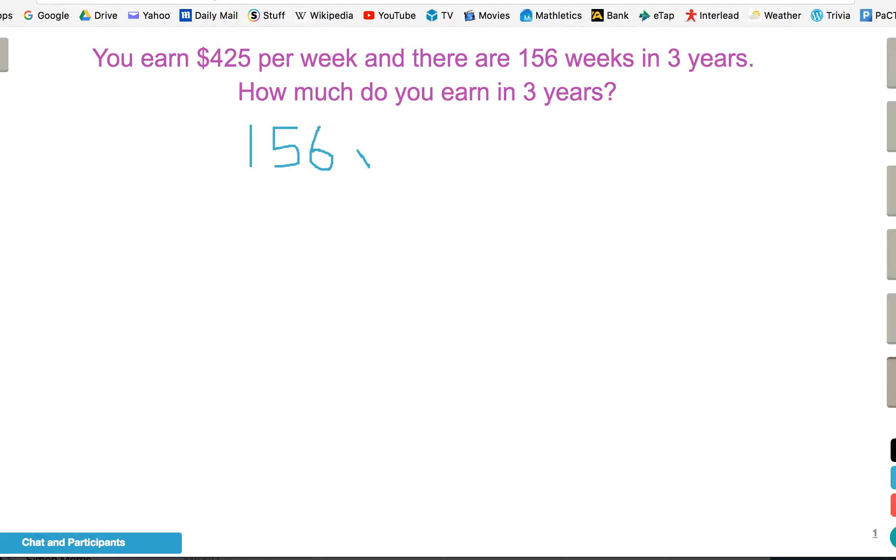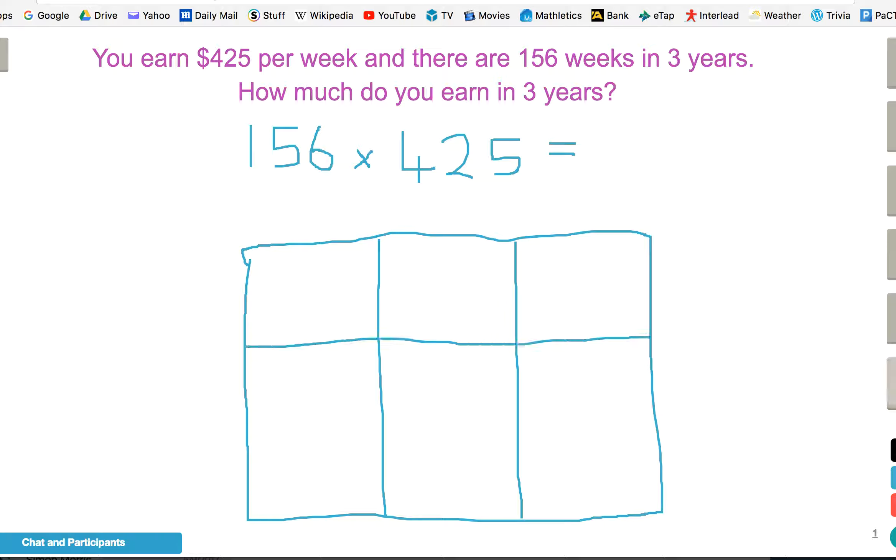So we lay out our sum: 156 weeks lots of $425, and we draw out our box strategy. In this case, both numbers are three digits, so we need three by three.